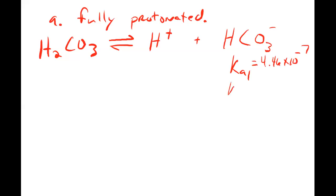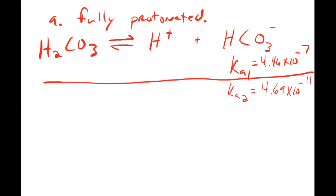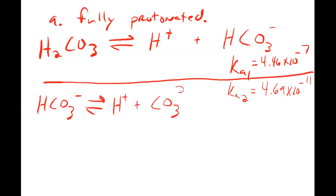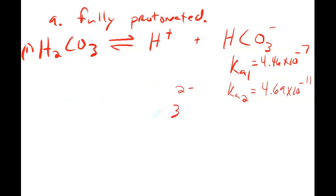Ka2, which describes donation of the second proton, is 4.69 × 10⁻¹¹. The reaction for Ka2 would be HCO3⁻, the bicarbonate ion, donating its proton and forming its conjugate base, the carbonate ion. So we have a first reaction and a second reaction — sequential donation of protons. That's what we mean chemically.